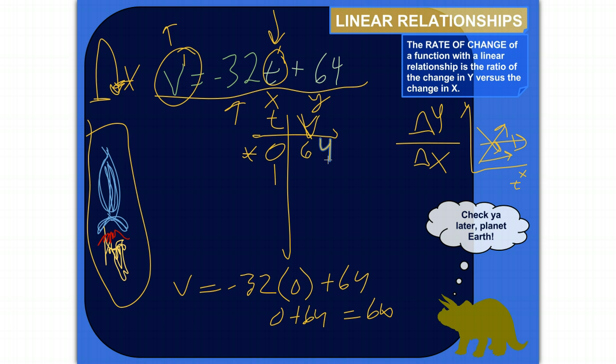Okay, let's plug in 1. So v equals negative 32 times t, and then t is going to be 1, plus 64. Negative 32 times 1 is negative 32, plus 64, that would be the same thing as 64 minus 32. So that would equal 32.